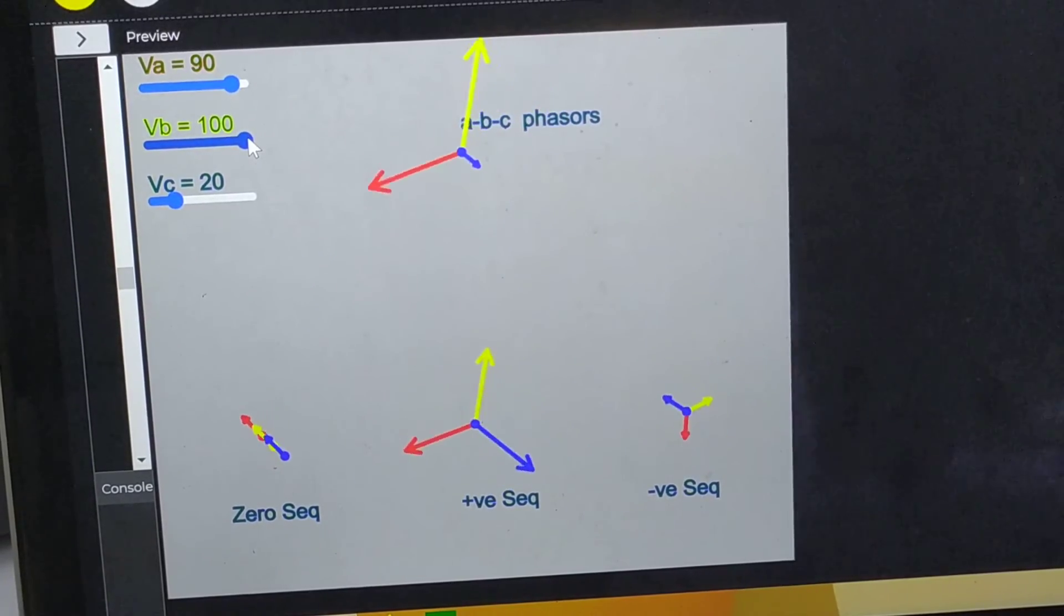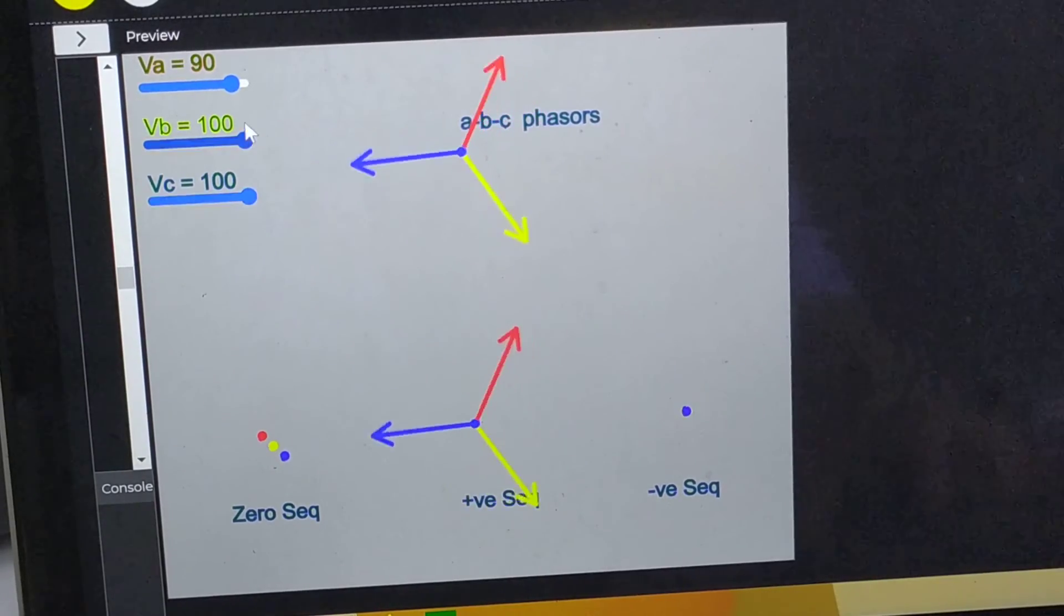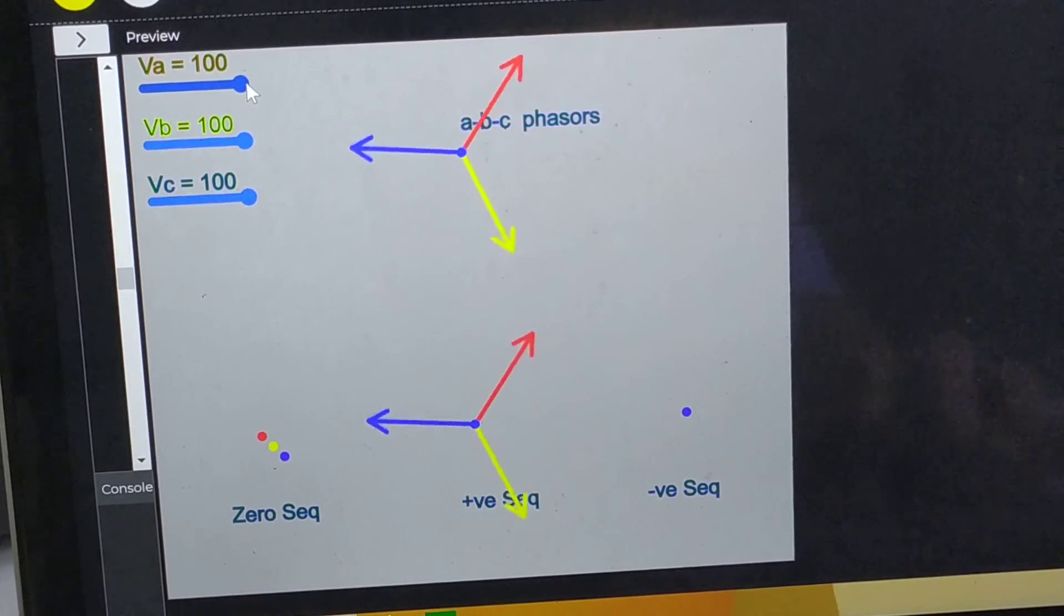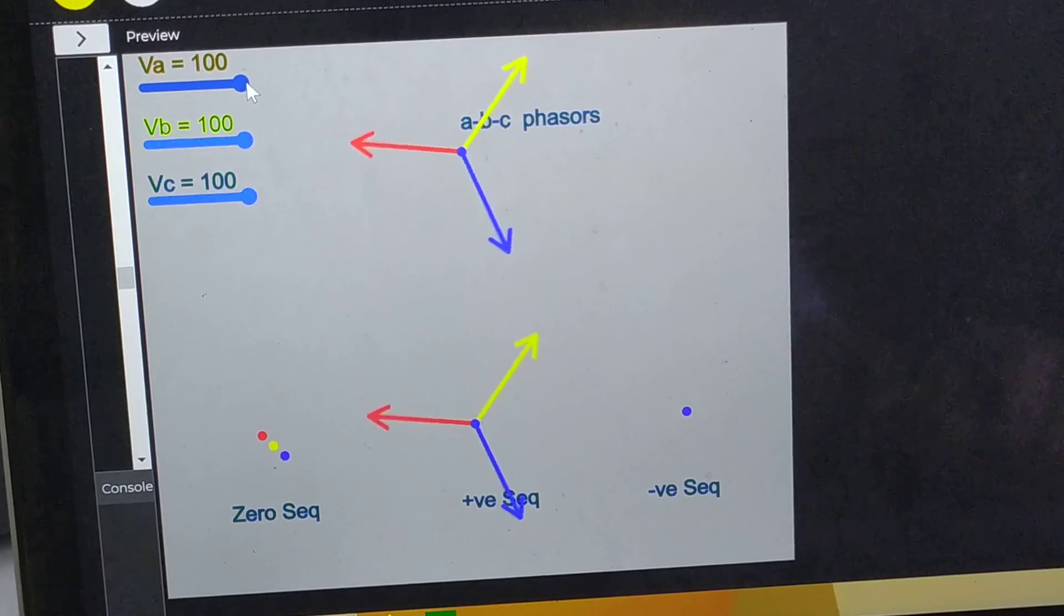Thus we can see that whenever there is any distortion from balance case, the sequence components come into picture. Let me restore. So again I have restored the three phases from balance case.